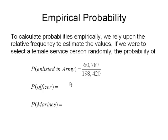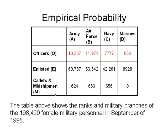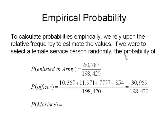Now we can do the same thing for officers, except now we have to figure out how many officers there were and divide it by the total number of women who were enlisted. So in our table, the officers could be in the Army, Air Force, Navy, or Marines. So I have to go ahead and take 10,367 along with 11,971, 7,777, and 854. And then I have to figure out the relative frequency with that. So I add those numbers together, I divide it by the total number of female service persons, which was 198,420, and that gives me the fraction 30,969 divided by 198,420.